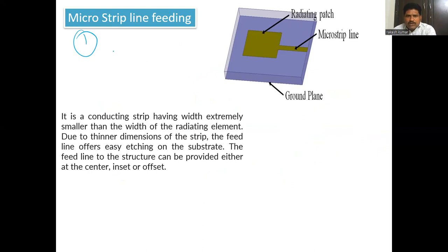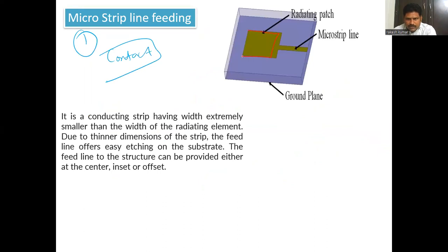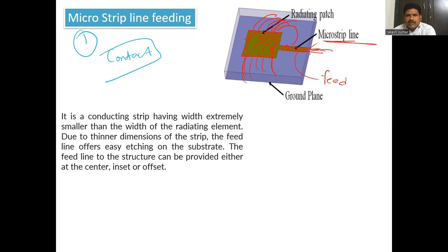The first technique is microstrip line feed, which comes under contact type. In this diagram, the patch is there, and directly connected to it is the feed element — the microstrip line is directly touching the patch. You provide excitation here and through this the patch will get excited and radiate. This is a direct method and the design is very easy.